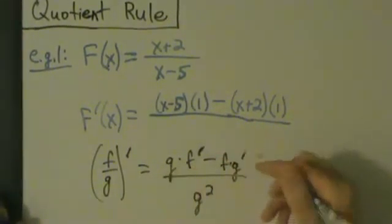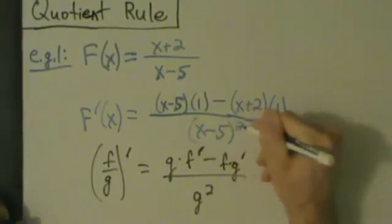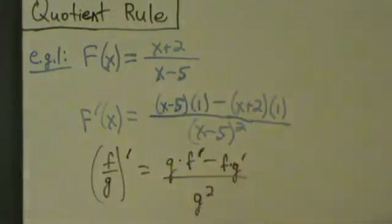And then all divided by the bottom squared, so in other words, x minus 5 squared. We can just leave it like that. There's really no reason to FOIL that, because that's x minus 5 times x minus 5.